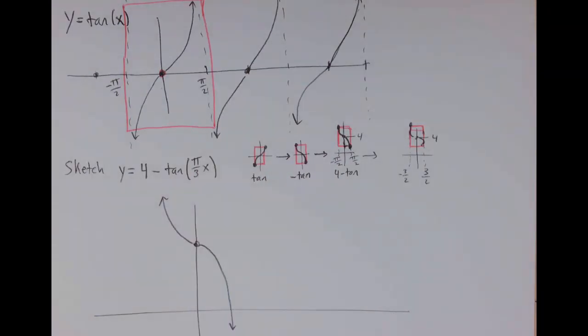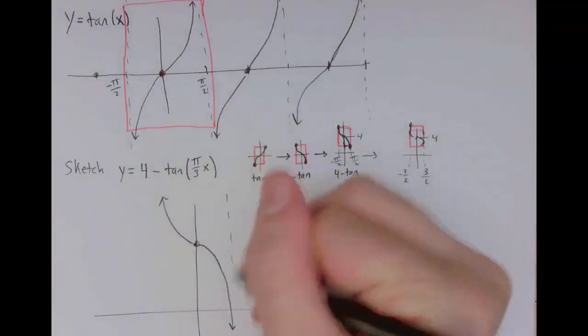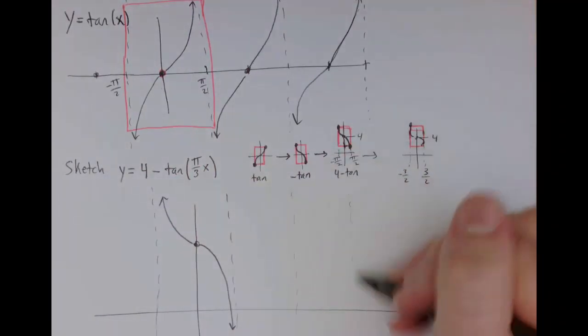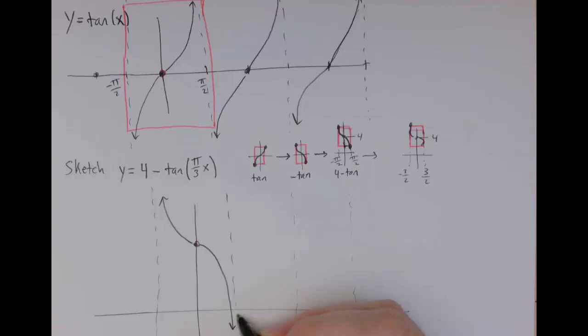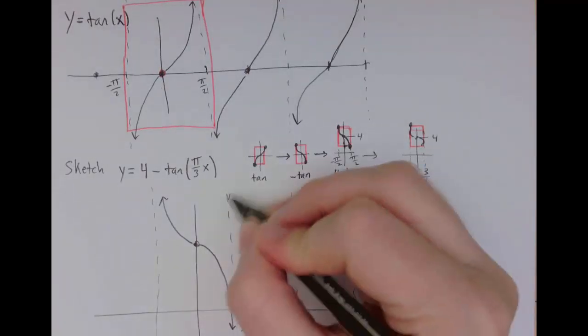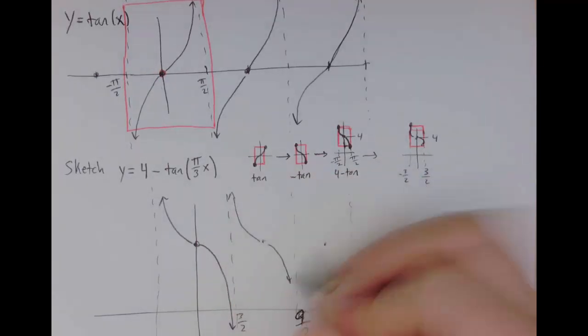What about the asymptotes? I know that the asymptotes now are happening at regular intervals of 3. So this is 3/2. This would be—whoops, sorry, not 5/2. It would be 9/2. And then adding another 3, it would be 15/2. And there we go.